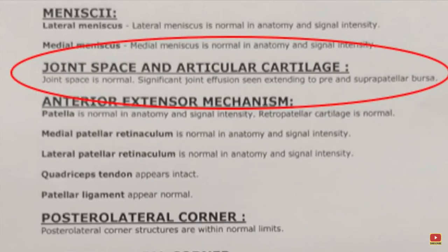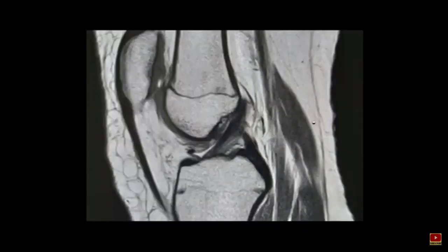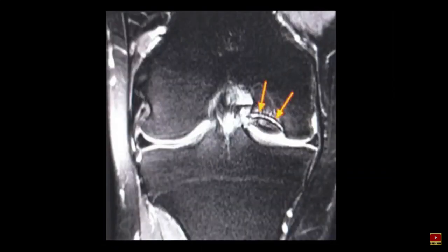Next in the format comes joint space and articular cartilage. Intact articular cartilage looks beautiful in a PD non-fat sat image. We typically examine the articular surface throughout the weight-bearing and non-weight-bearing surfaces. This is an example of cartilage loss in the weight-bearing surface. We have to measure the cartilage defect. We can also have osteochondral defects — we must measure them, assess whether they are separated or not, and determine their exact location.